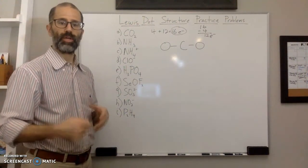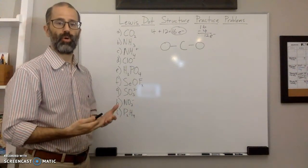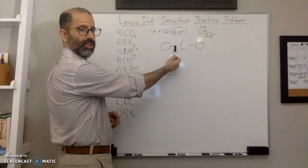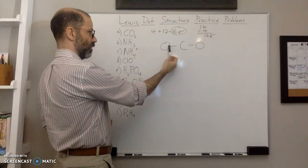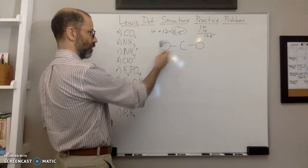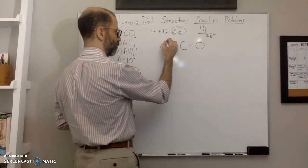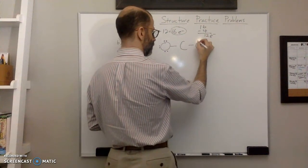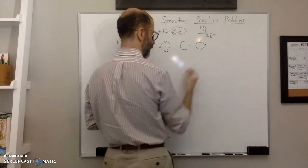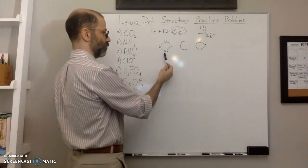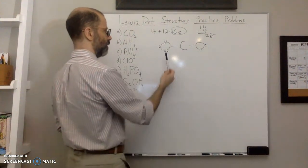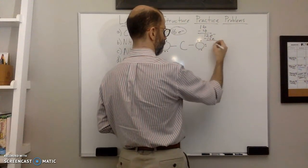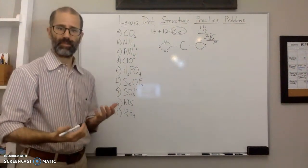The third step is to give lone pair electrons to your outer atoms first so they can have an octet. I have twelve electrons left over. Oxygen is already bonded, sharing two electrons, so I need three more lone pairs on each oxygen — one, two, three on this one, and one, two, three on the other. That's six pairs total, which is twelve electrons, so I subtract twelve and I have no more electrons to give.